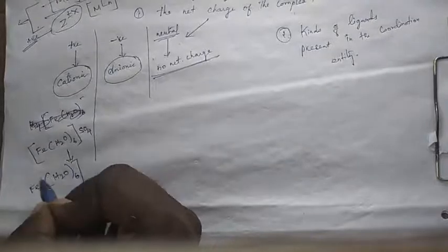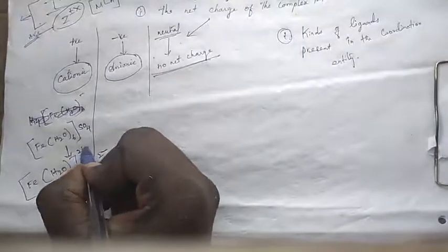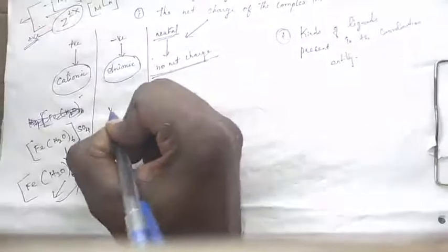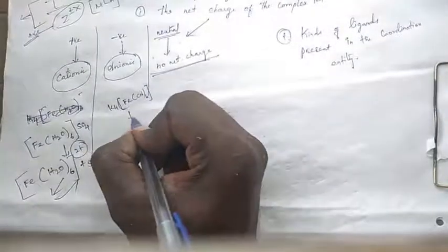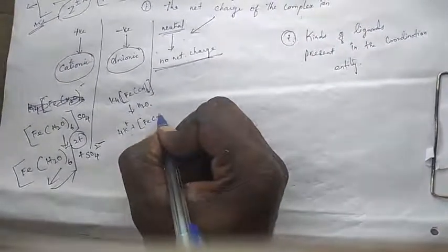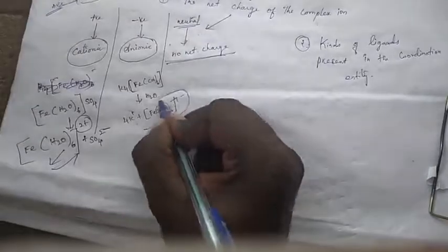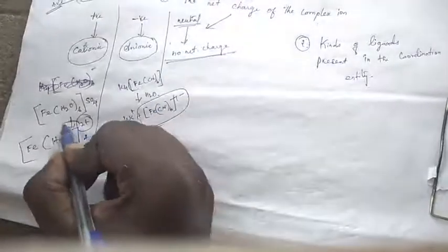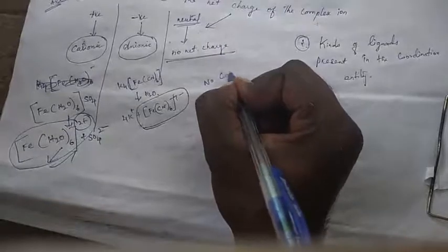Fe[H2O6] is the coordination sphere, plus SO4 2 minus. Therefore charge is 2 plus, so Fe[H2O6] is a cationic complex. K4[Fe(CN)6] on hydrolysis gives 4K+ plus [Fe(CN)6]4−, which is negative — an anionic complex. Ni(CO)4 has no net charge, therefore it is a neutral complex.